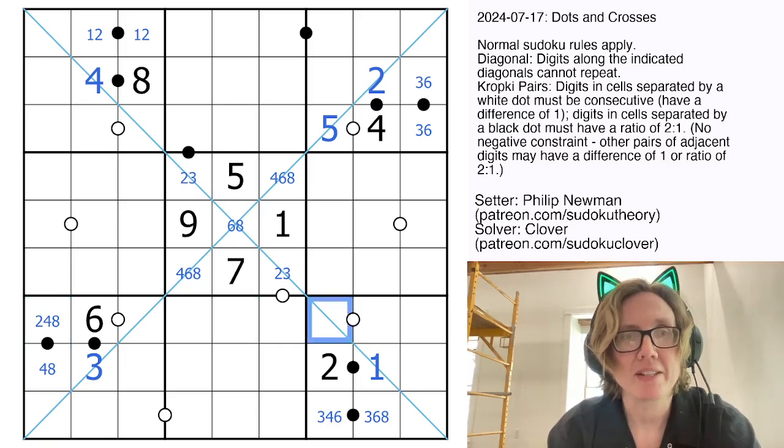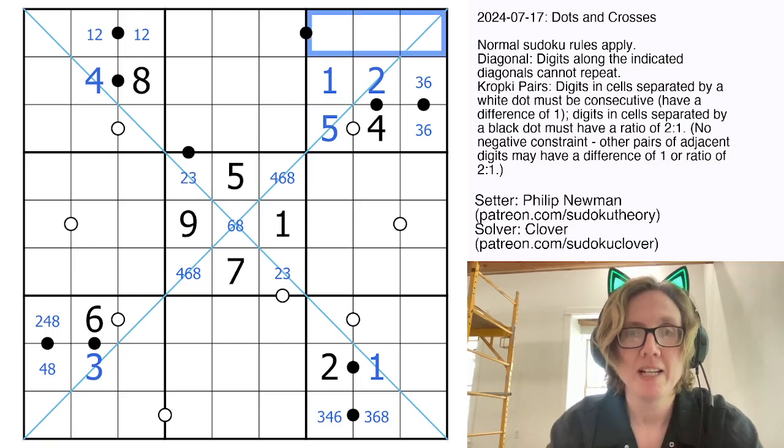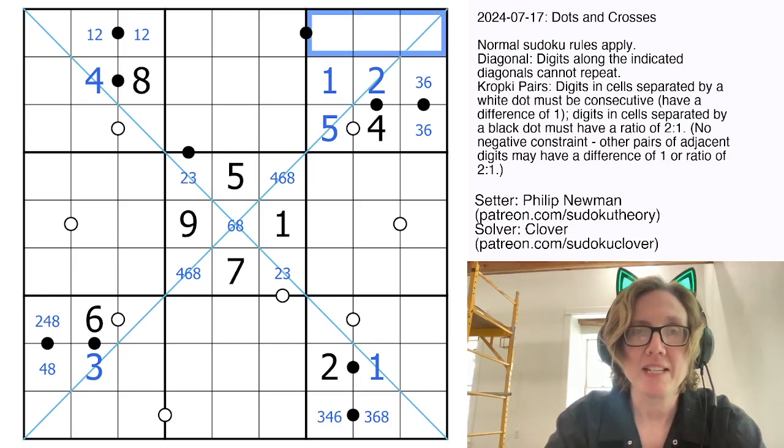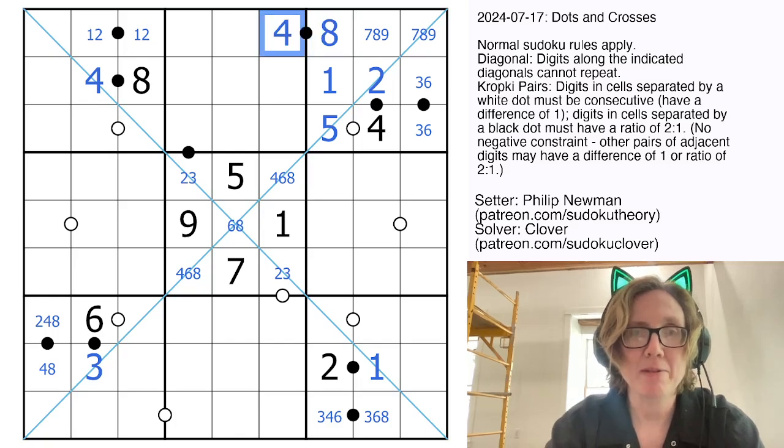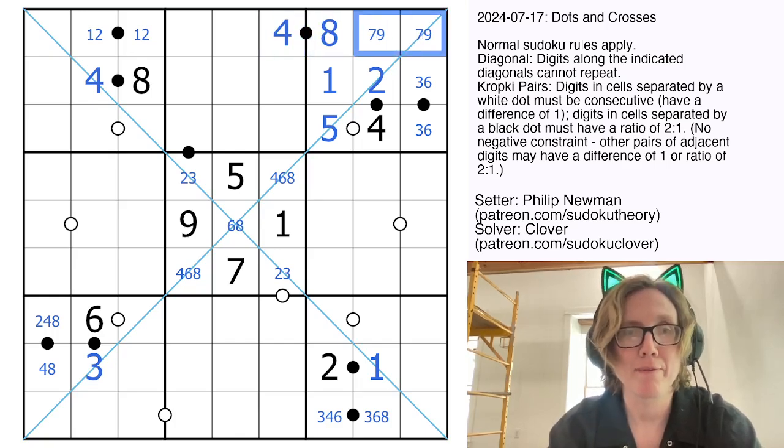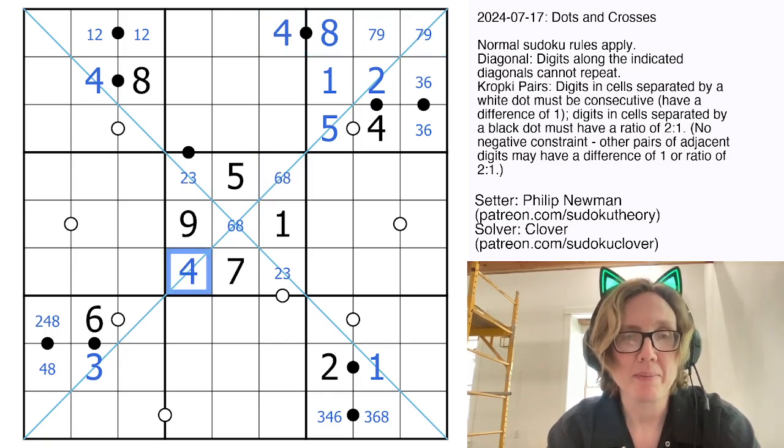So what has that given us? So we know that 1 is in row 1 up here, so 1 can't go in those cells, so 1 must go there. These cells are going to have to contain 7, 8, and 9. The only one of those digits that can ever go on a black dot is 8, which is in a 1 to 2 ratio with the number 4. That eliminates 4 from this cell, and now the only place for 4 in the central region is there.